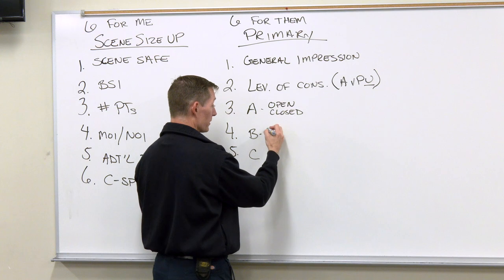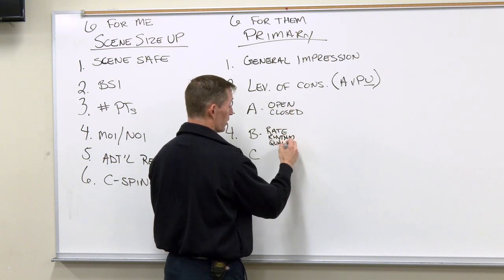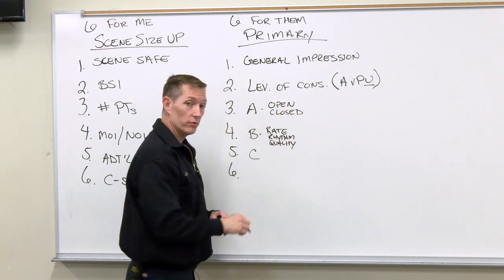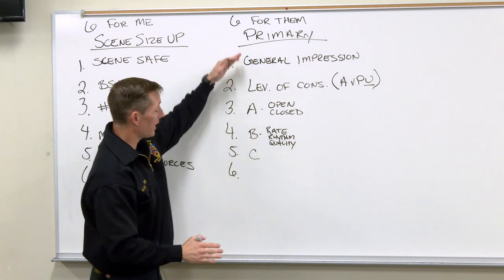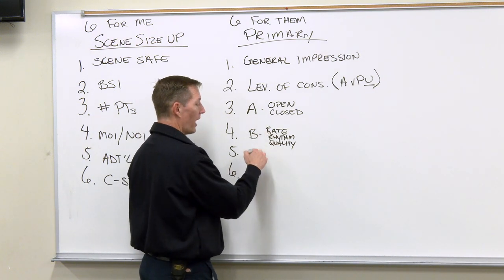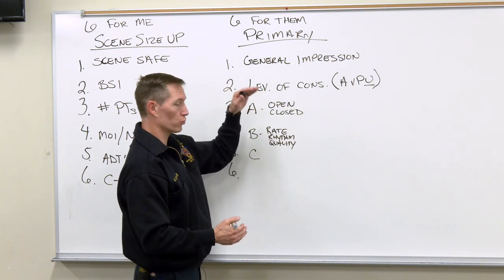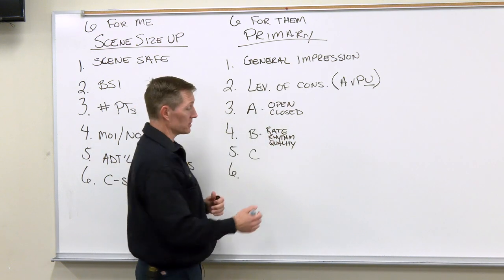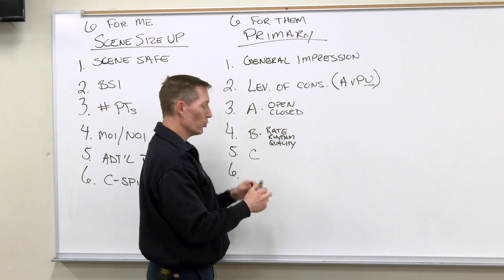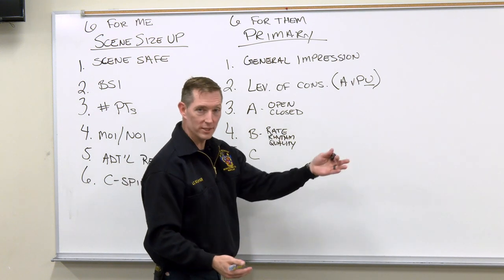When I assess B for breathing, I want to know three things: rate, rhythm, and quality of those respirations. Keep in mind I'm not taking formal vital signs during my primary assessment. This entire process might take me 40 to 60 seconds, so I just want to know: is the rate way too fast or way too slow? Is the rhythm regular or irregular? And quality means, from where I'm standing — even without a stethoscope — do I hear any adventitious lung sounds? Can I hear stridor or audible wheezing as I approach?